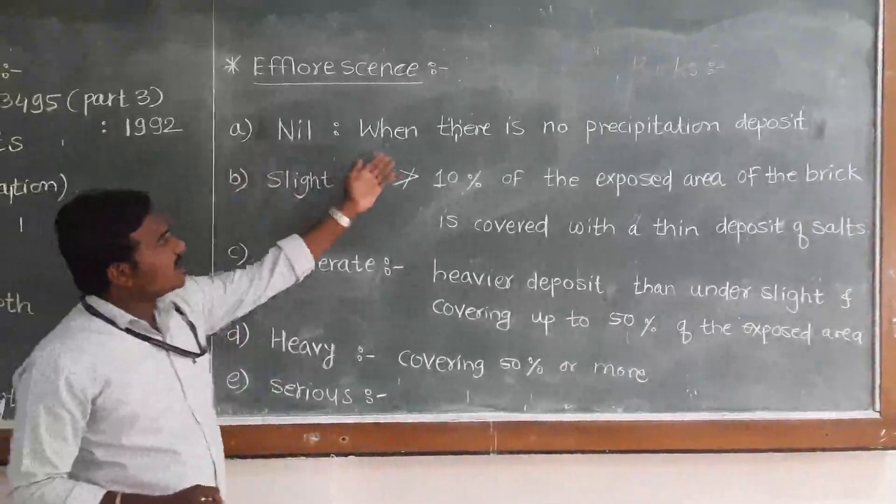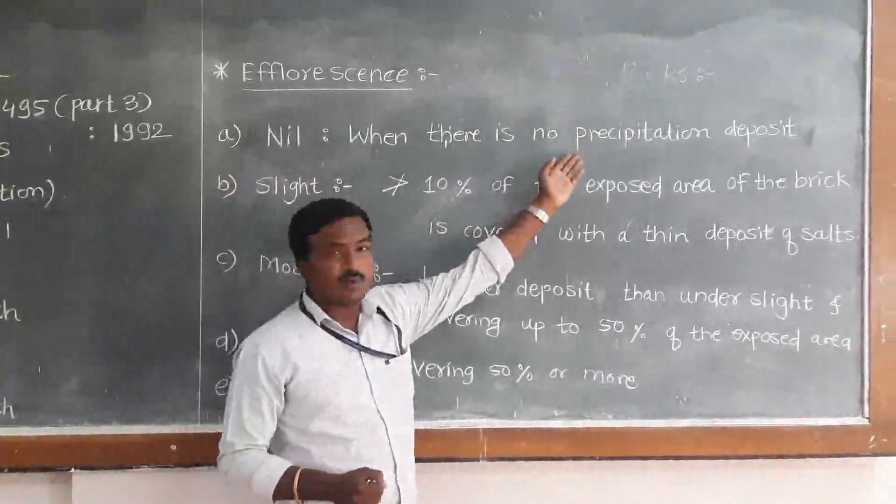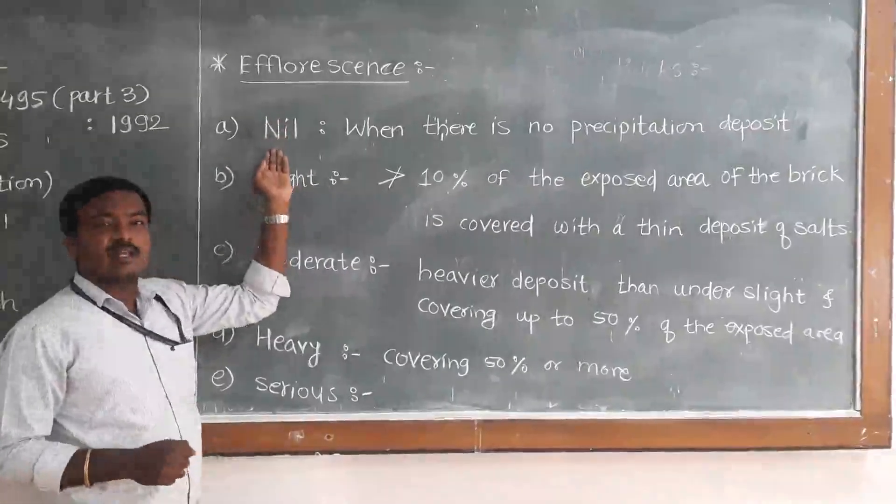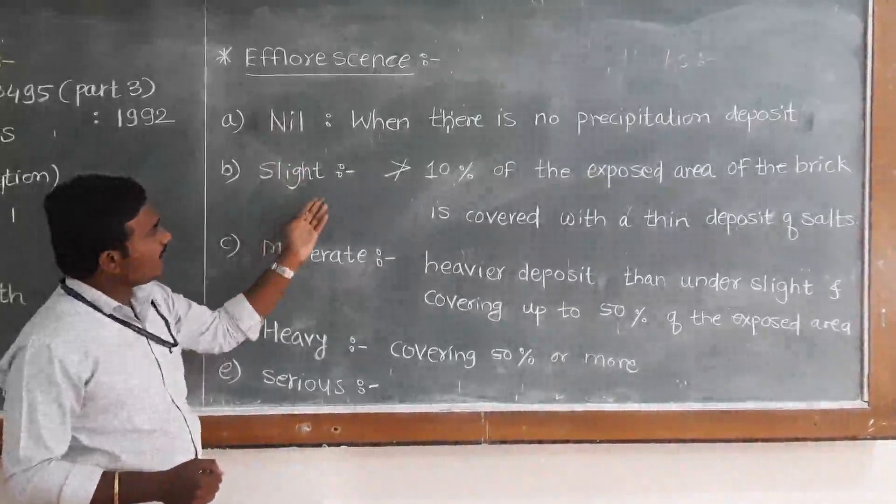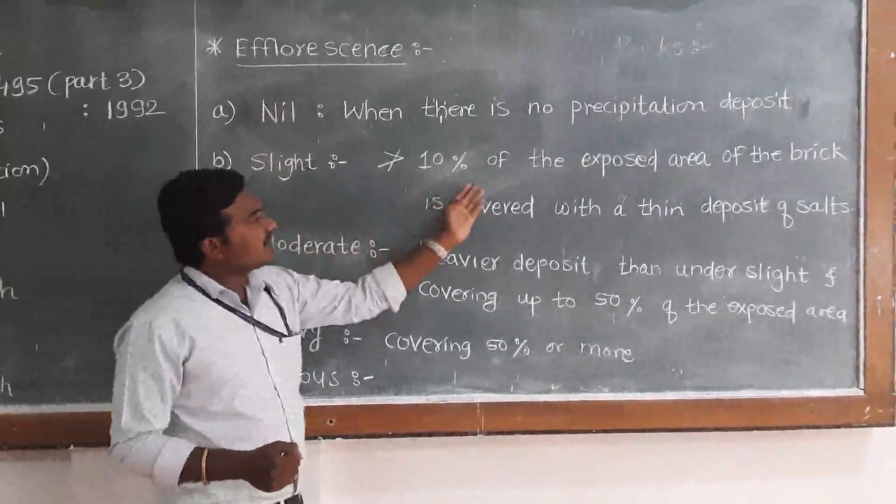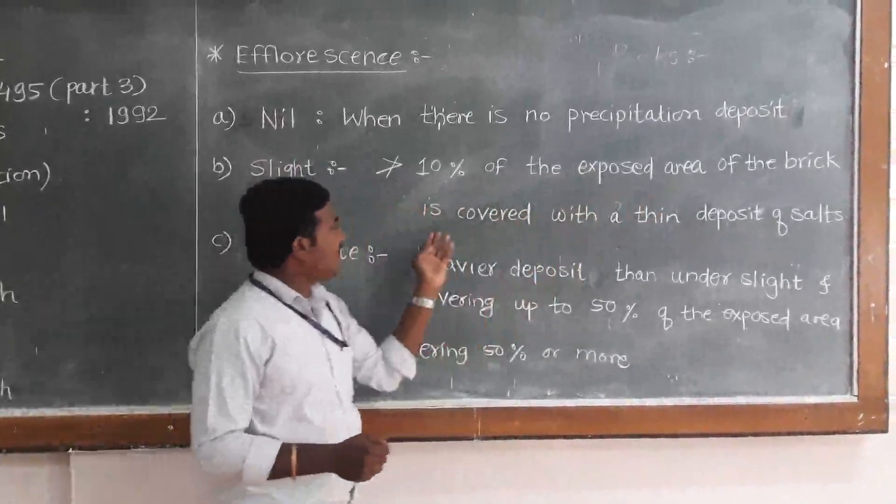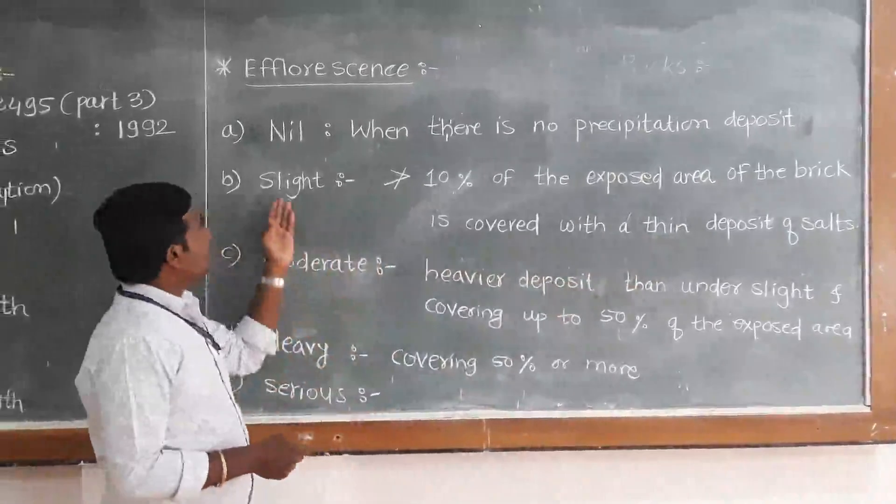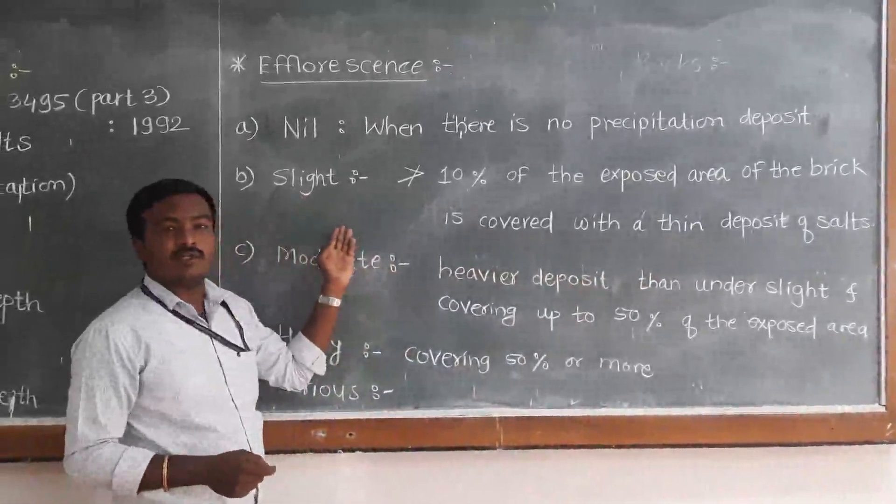When there is no precipitation deposit on the brick, then efflorescence is nil, or there is no efflorescence. When no more than 10% of the exposed area of the brick is covered with a thin deposit of salts, then that is slight efflorescence.